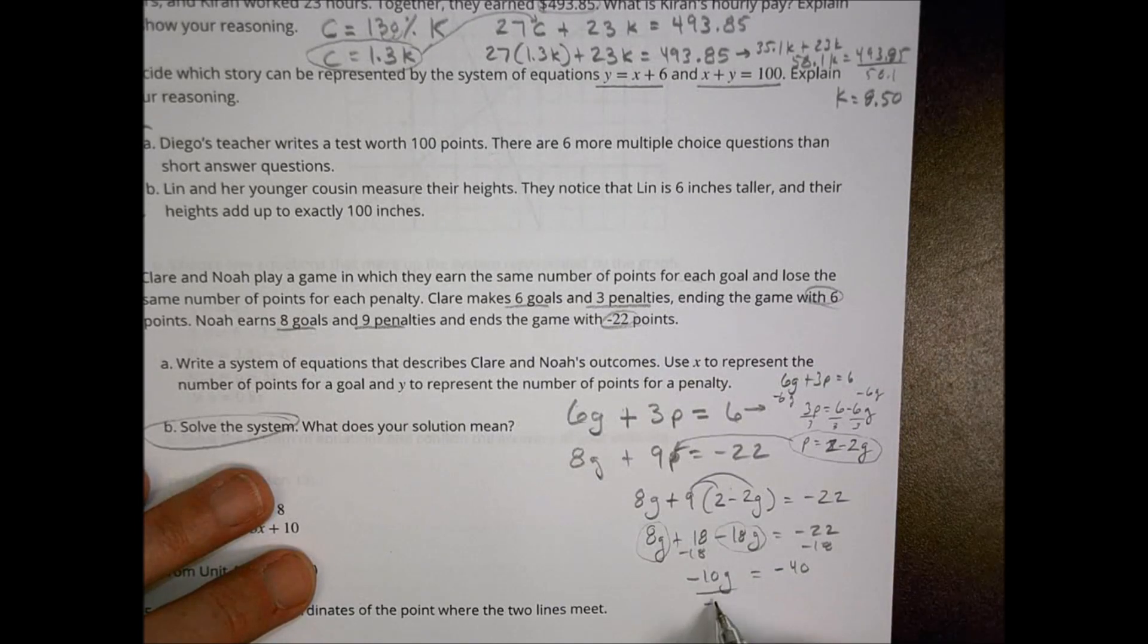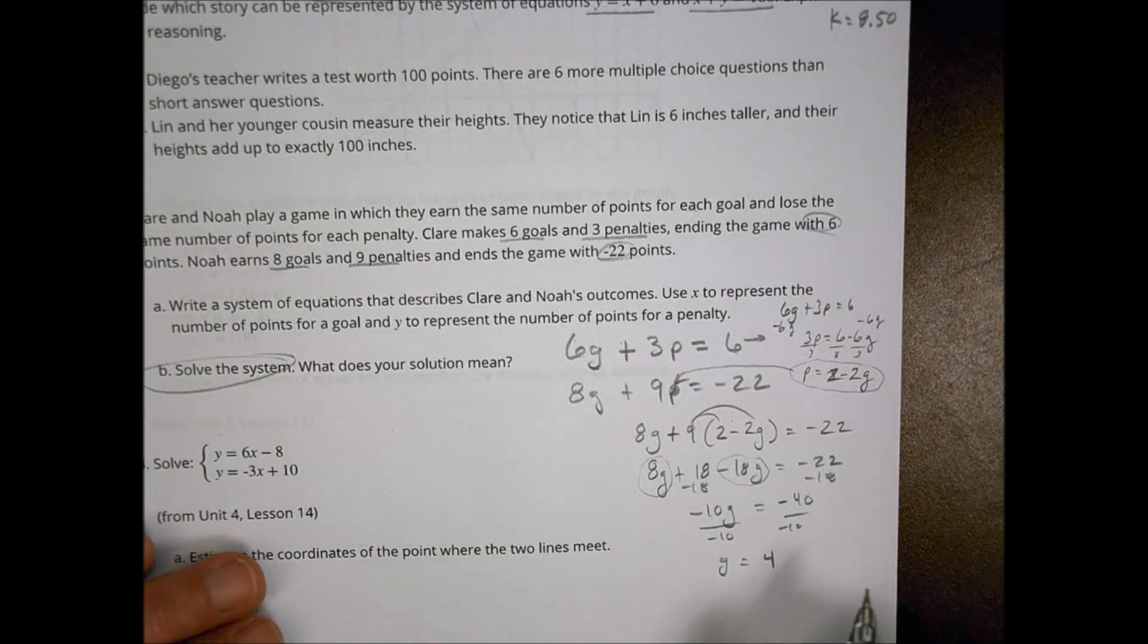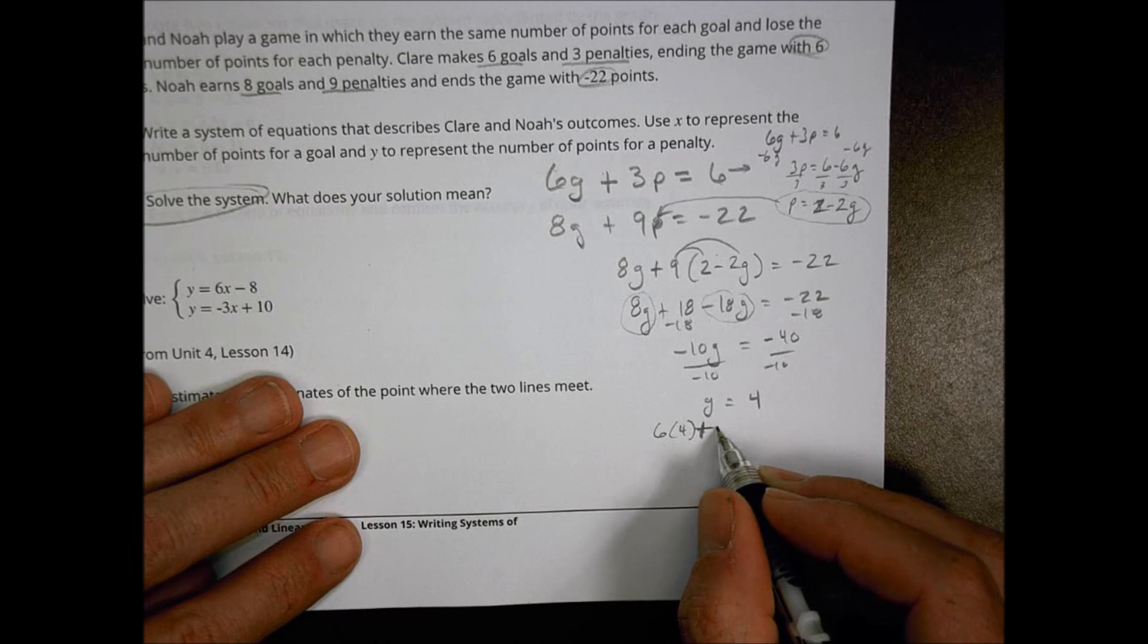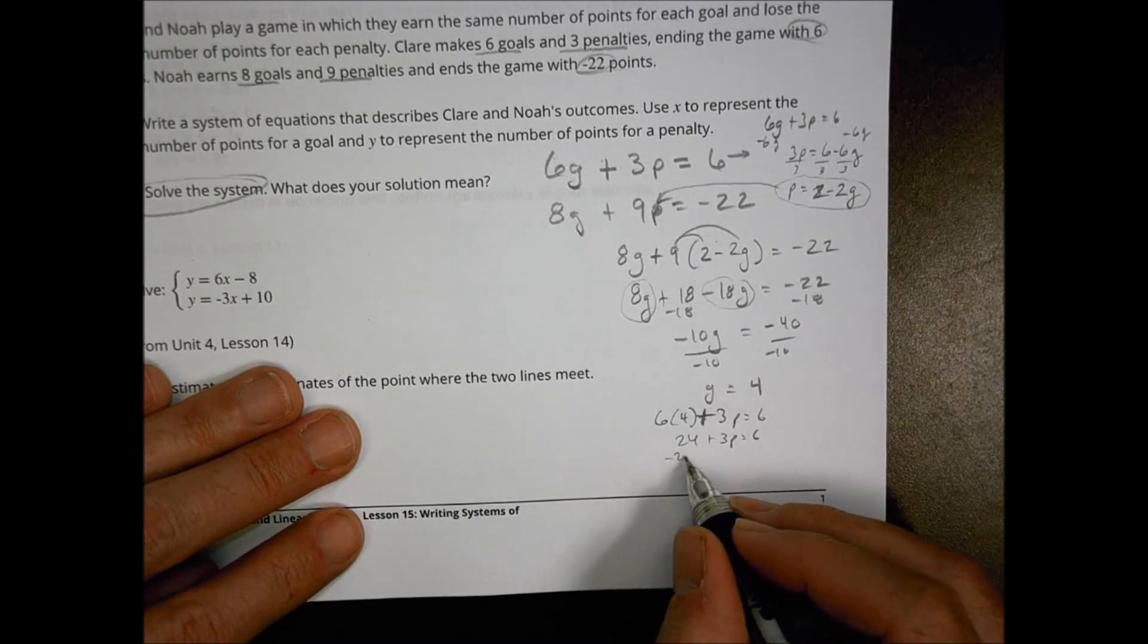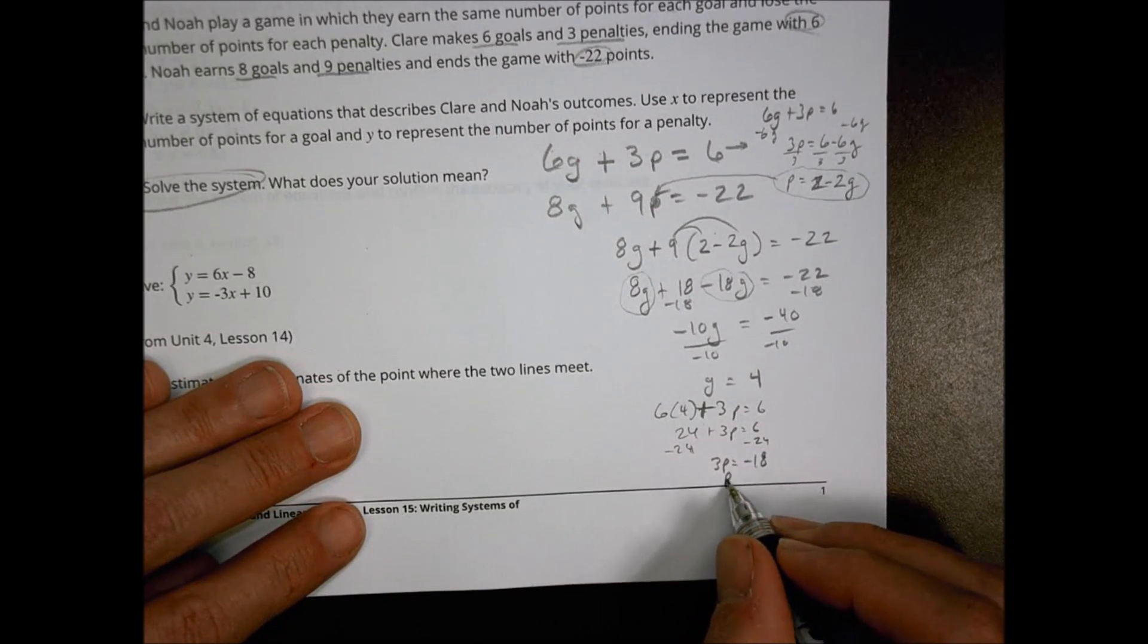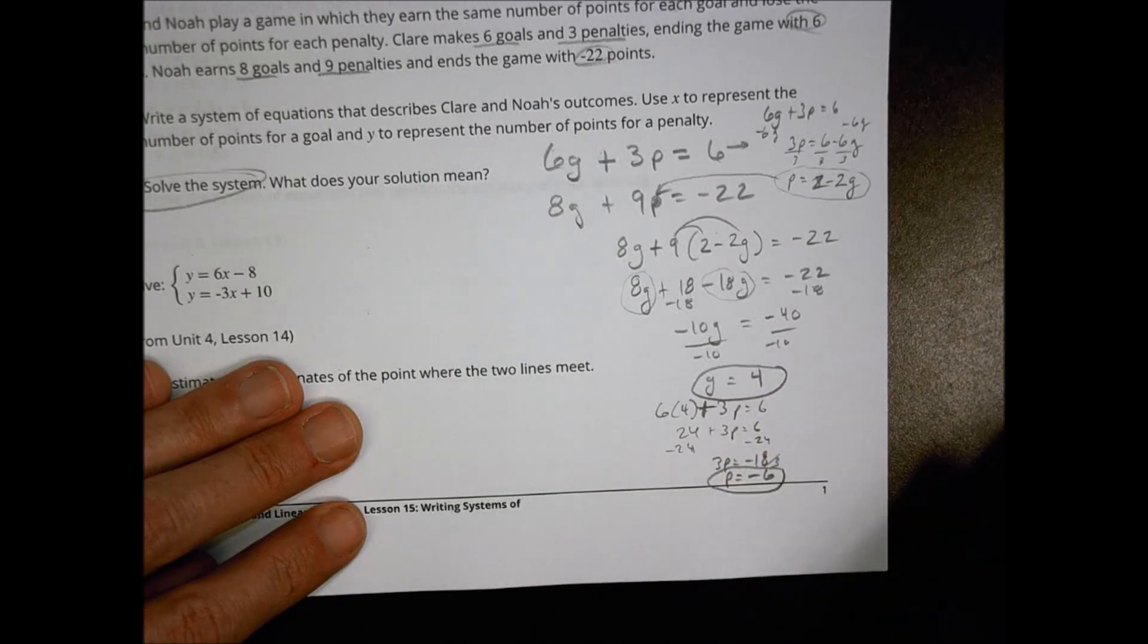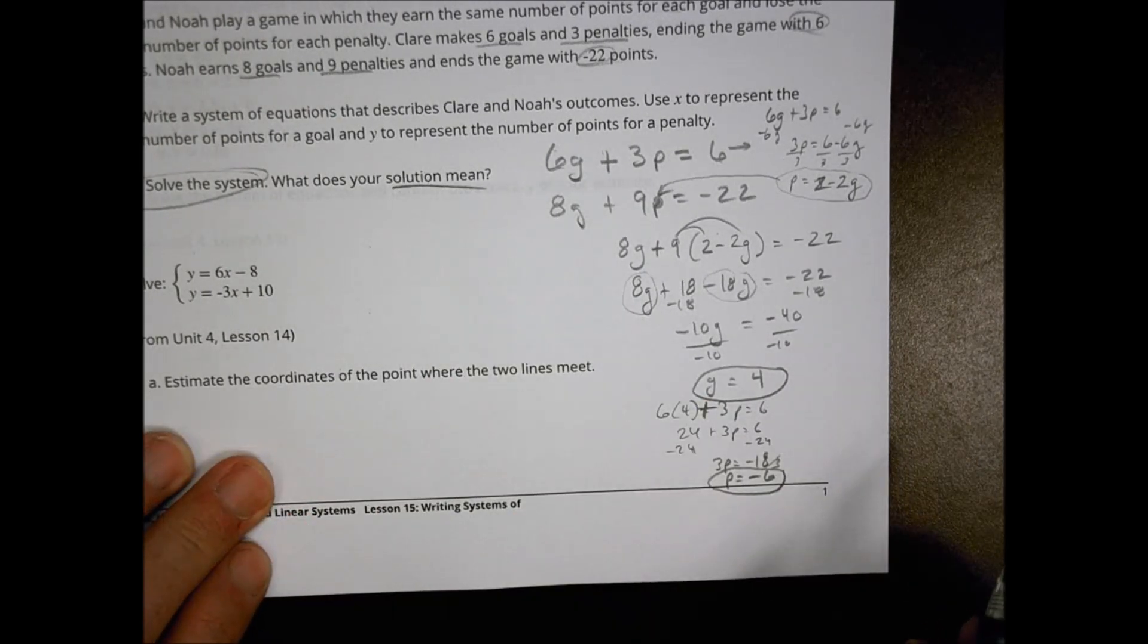Now with G equal to 4, I can now plug it back in to solve for P. So here is 6 times 4 plus 3P equals 6. So 24 plus 3P equals 6. Subtract 24 and 3P equals negative 18, which means penalty equals negative 6, I'm going to divide by 3. So my goals is 4 points a goal and it's negative 6 points for each penalty. And that's what I find out when I find that solution.